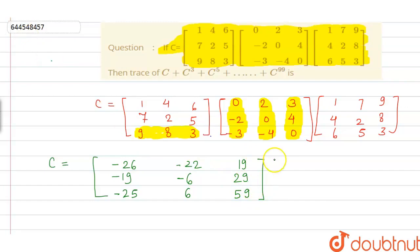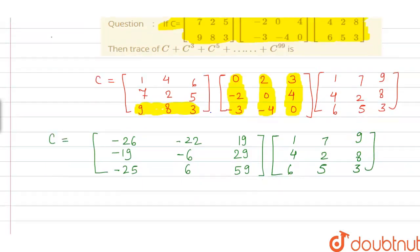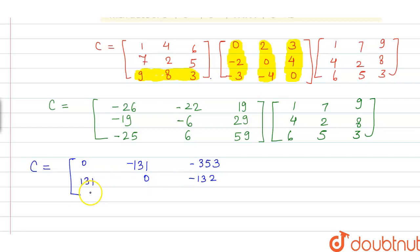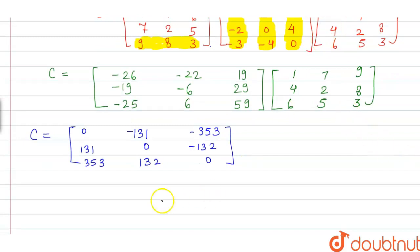This intermediate matrix is then multiplied with the third matrix having entries 1, 4, 6, 7, 2, 5, and 9, 8, 3. After multiplication, the final matrix C has entries: 0, -131, -353, 131, 0, -132, 353, 132, 0.